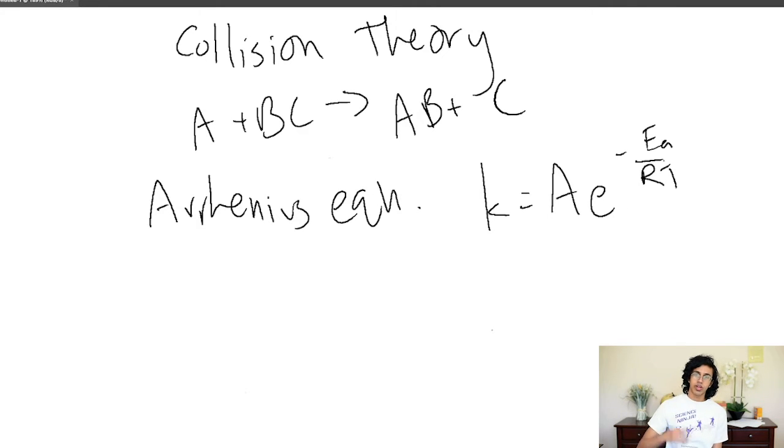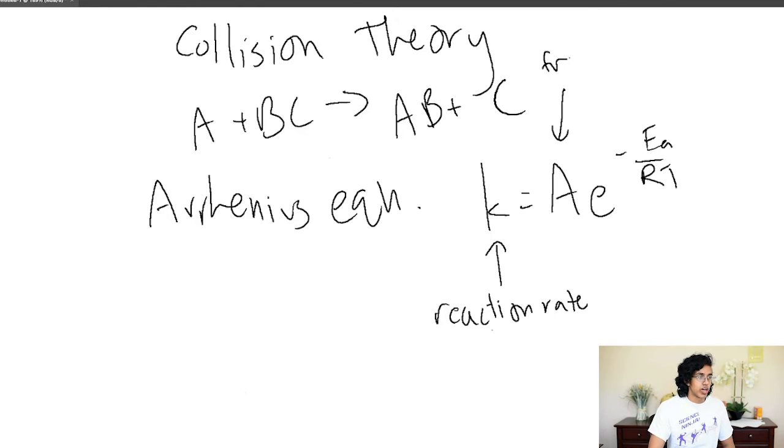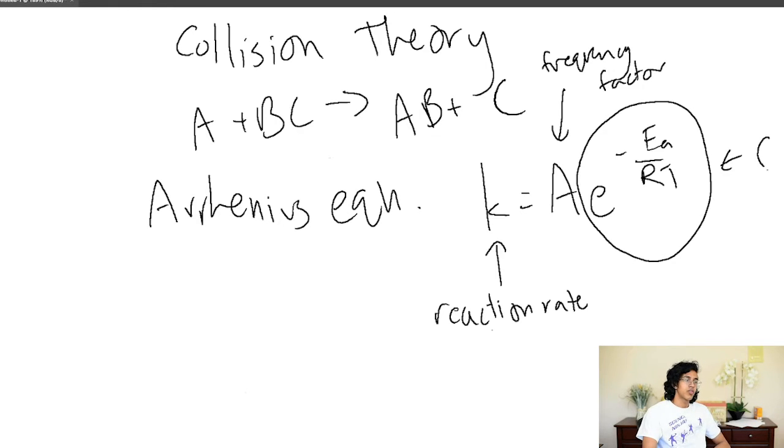Essentially what it says is K is equal to A times E to the negative EA over RT. So let us go through this and explain what everything means. First guy over here is called K, and you probably recognize that as a reaction rate, we're talking about kinetics. Then this guy over here is called the frequency factor. And as the name might suggest, it has to do with how often collisions occur, and how often they occur in the right orientation. So this deals with the first and third criteria for our collision theory. This E to the negative EA over RT is basically a measure of what fraction of collisions have enough energy. This E is like 2.7, the constant E. And then this EA is activation energy. This R is the gas constant at 8.31 joules per Kelvin moles. And then T is the temperature in Kelvin.